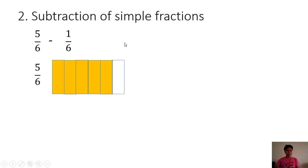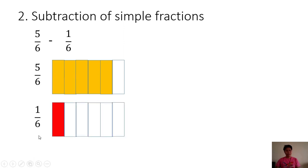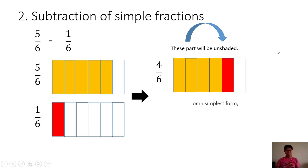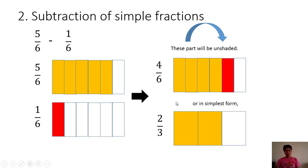Another example: 5/6 minus 1/6. We have 5/6 and 1/6. We will take away 1 shaded part, and we have 4 shaded parts remaining. Our answer is not yet in the lowest terms, so we are going to reduce it and it becomes 2/3. Therefore, 5/6 minus 1/6 is equal to 2/3.